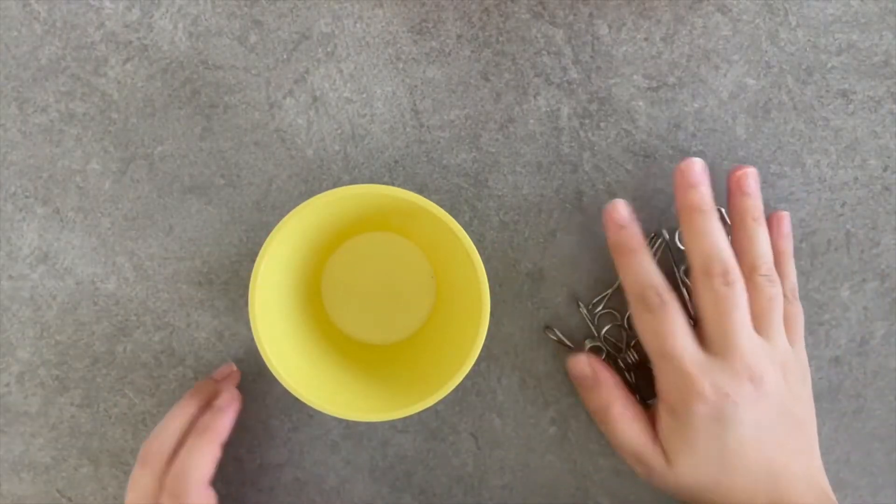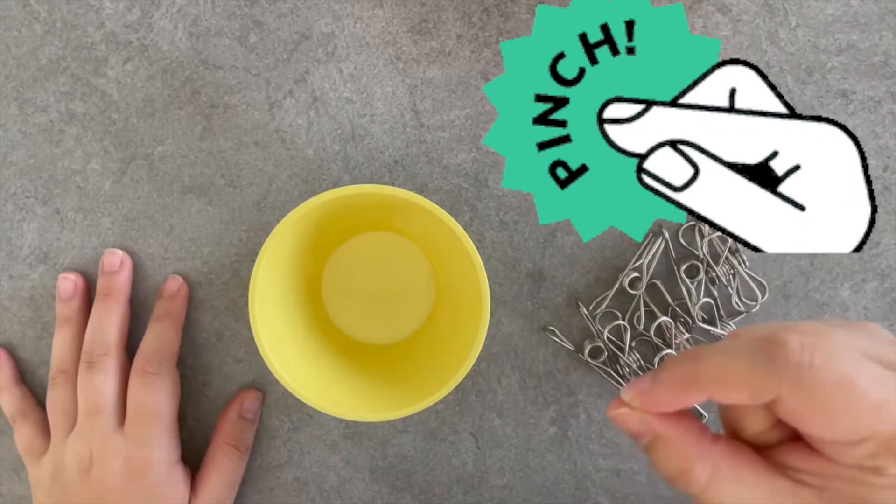Our first activity we are going to use the pegs and a bowl. Let's get into it. So I've got my bowl and ten pegs. What we're going to do is use our pinching fingers and we are going to pinch all ten pegs onto our bowl.